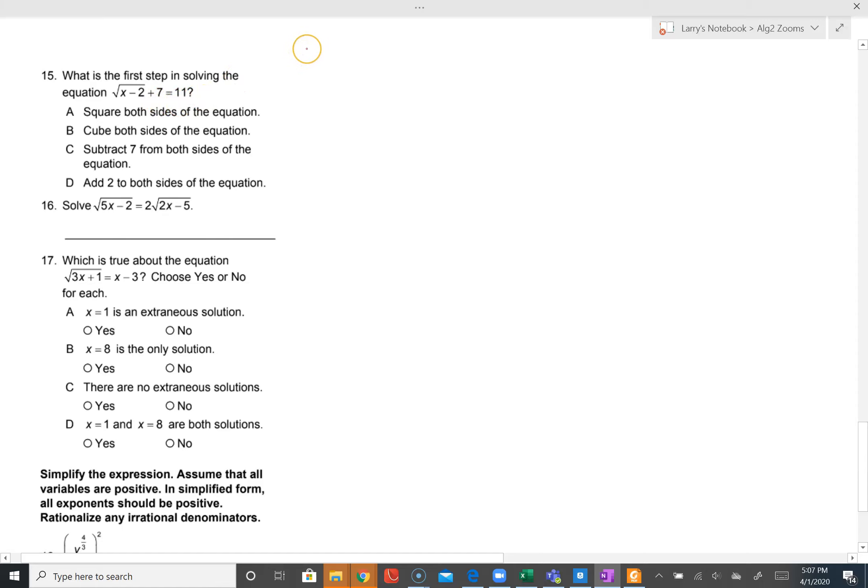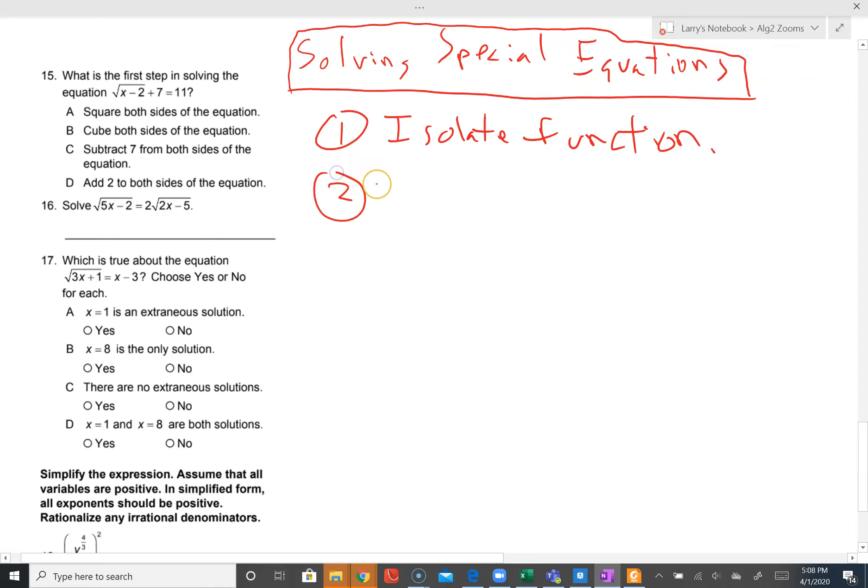We've had this two step process all year long for solving special equations: square roots, squares, absolute values, anything with a funky function in it. Step one, isolate the function. Whatever the special portion is, isolate it. Step two, undo the function, the inverse to get the variable out of the function.